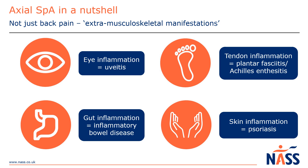We have lots more information about these conditions on our website and even have a free downloadable guide to uveitis. As symptoms are linked to inflammation, some medications that help axial SpA can also help these conditions, which is another reason why it's important to make your rheumatologist aware if you're experiencing any of these symptoms.